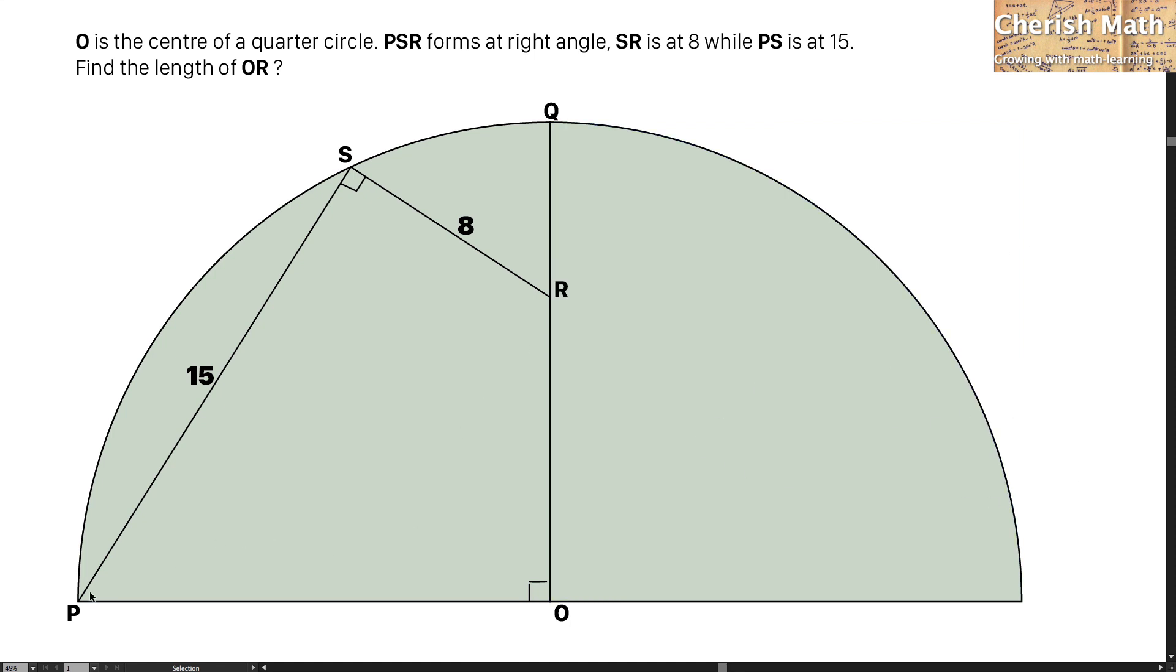I'm going to connect a line from point P to the point R, and this is going to be a straight line. I can find out what is the value of this line PR by using Pythagorean theorem.